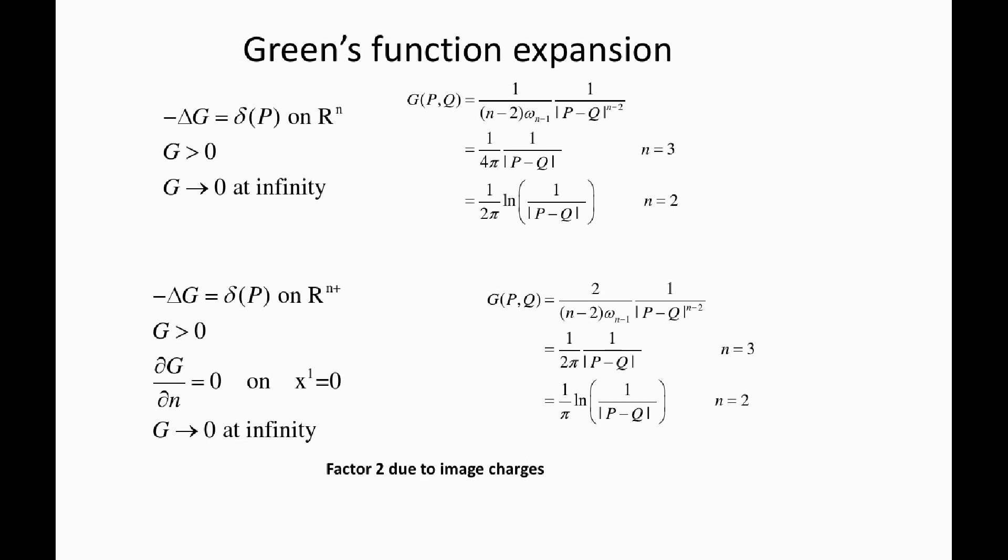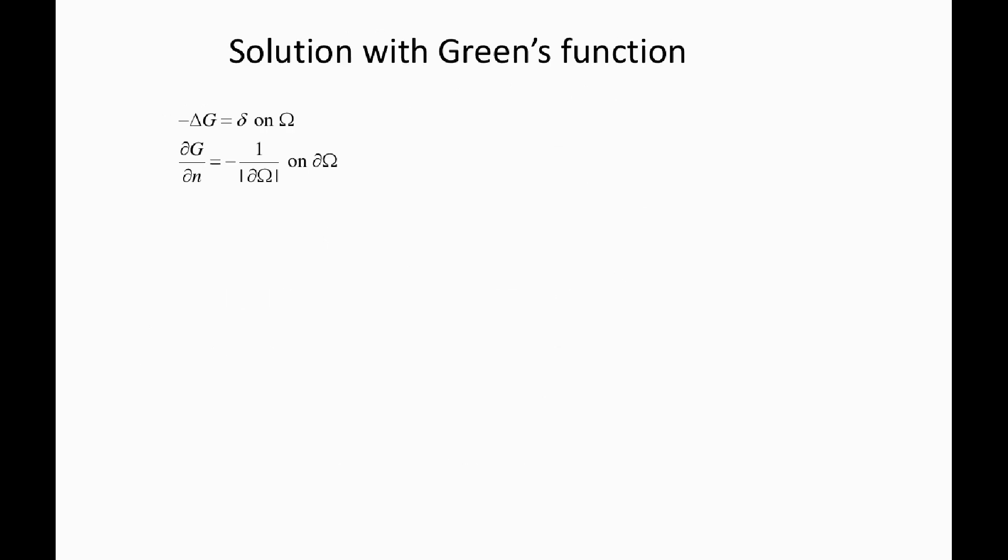Now, instead of having the Green's function in R^n, if you have the plane, so you are in R^n_+, and if we impose this Neumann boundary condition on this, what is important to notice is that for a point P that is exactly on the boundary, you have a factor 2 in the Green's function. This is due to the image charge which is well known in electrostatics. We have seen that before in the theory of Green's function in the previous class.